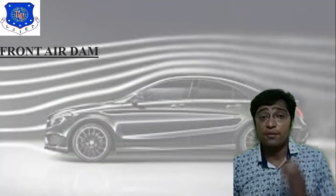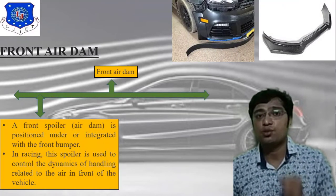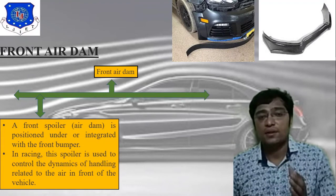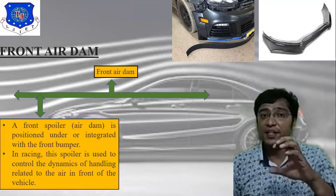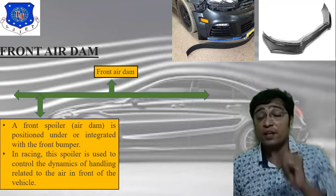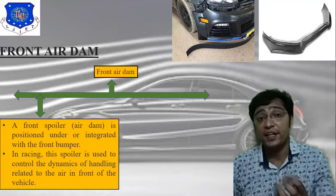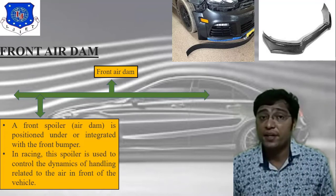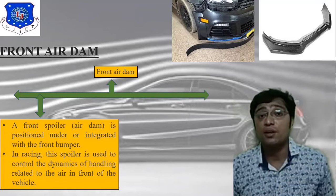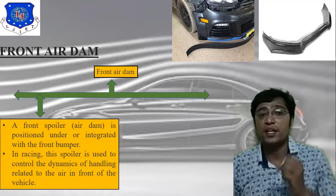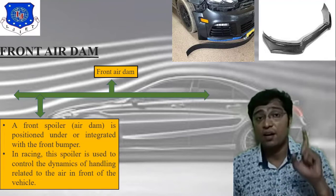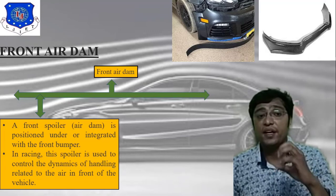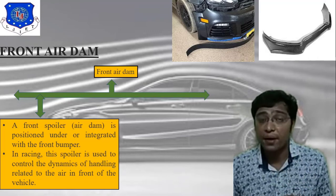The second device is the front air dam. Two images are attached related to the front air dam. It is just like a spoiler but attached at the front part, at the bottom of the car body. A front air dam or front spoiler is positioned under or integrated with the front bumper.